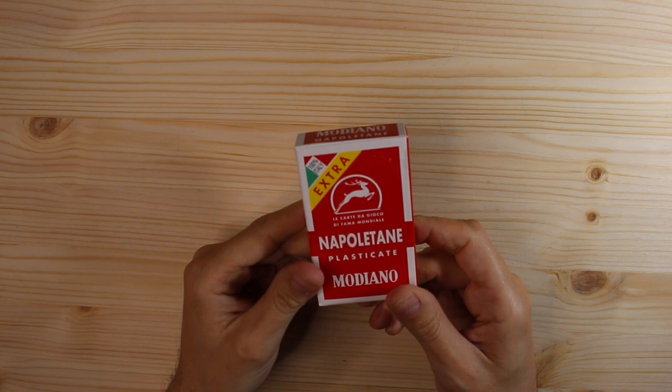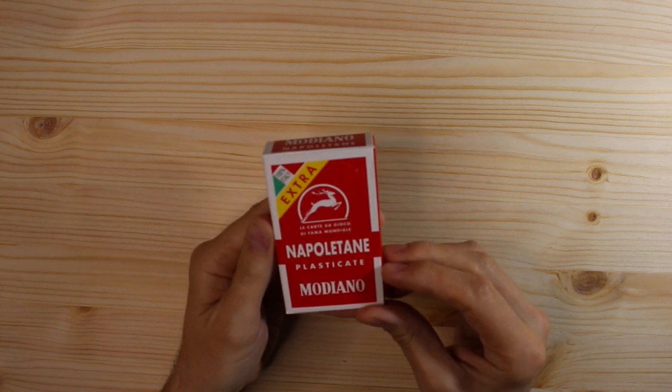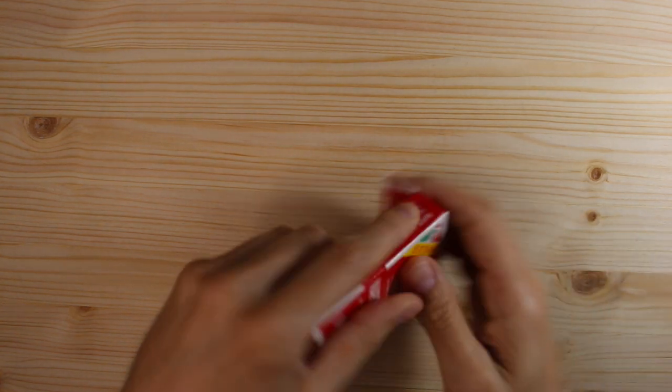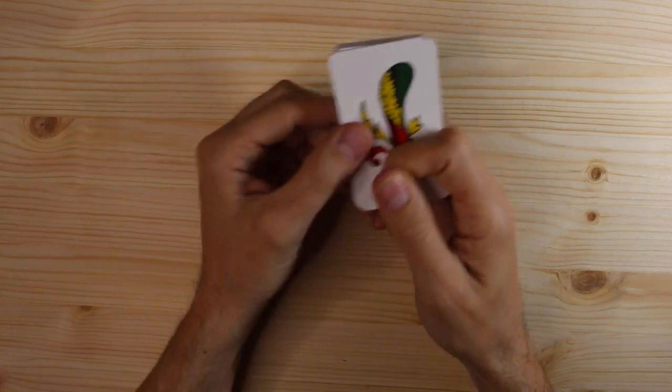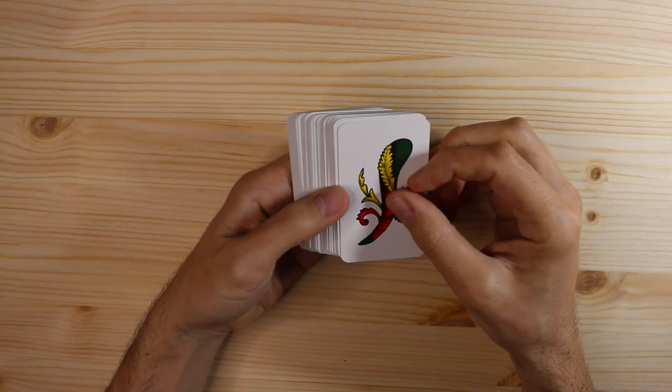So follow me in the video and I'll teach you how to play Scopa. Come on. All right everyone, so this is an Italian deck of cards, Modiano, Neapolitan. We're gonna open this and what you got in here is 40 cards.